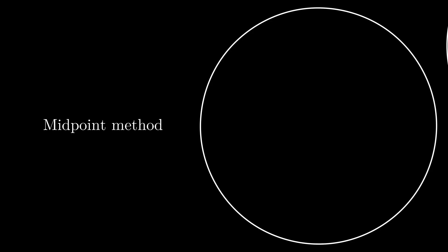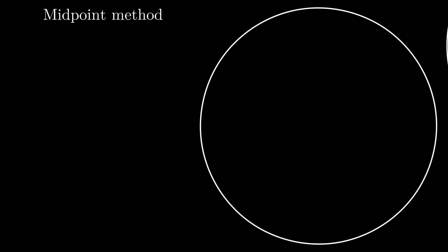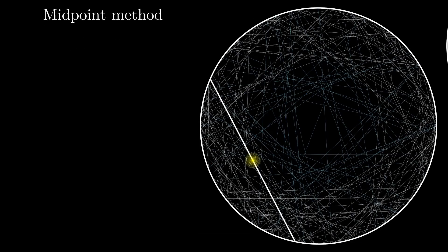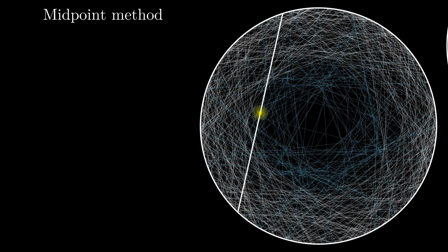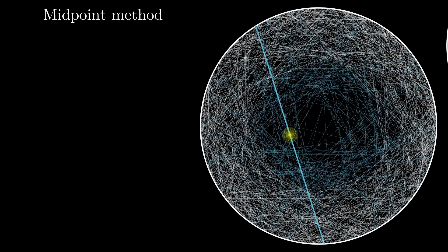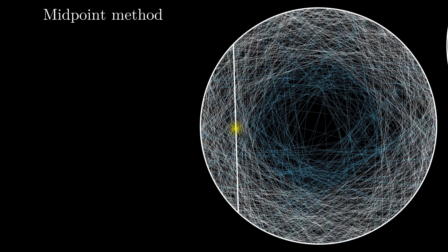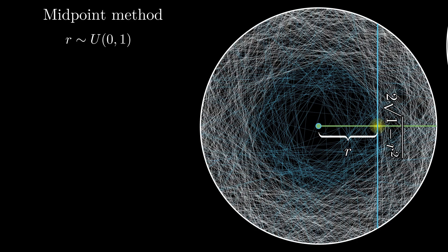We now go to the midpoint method. Here we select a random point in the circle, as we did in our simple problem at the start of the video, and draw a unique chord that has this point as its midpoint. If this point is at a distance r from the center, then the length of the chord will be twice the square root of 1 minus r². But r in this case is not uniformly distributed. Remember from our earlier discussion: the probability of a randomly chosen point being at a distance less than r from the center is r².